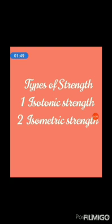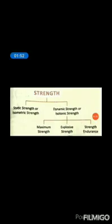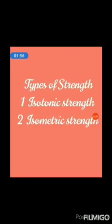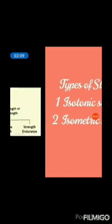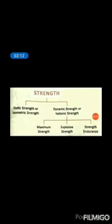There are two main types of strength: isotonic strength and isometric strength. Different types of sports require different types of strength, so for better understanding, strength can be divided into the following types. Strength is mainly divided into two types: static strength, also called isometric strength, and dynamic strength, also called isotonic strength. Dynamic strength is further divided into three types: maximum strength, explosive strength, and strength endurance.